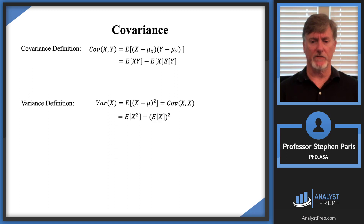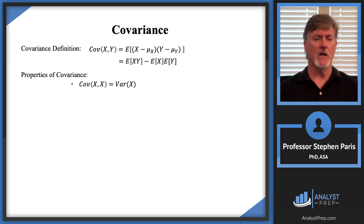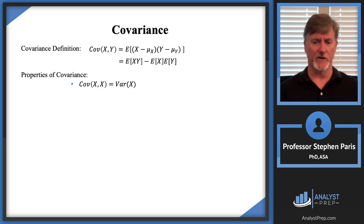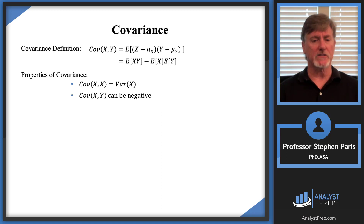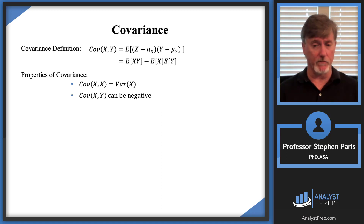Let's look at some other properties of covariance. First, we just established that the covariance of a random variable with itself gives you the variance of that random variable. Now, remember the variance of a random variable is never negative — but that's not true with covariance. The covariance between two random variables can be negative, so just be careful there.